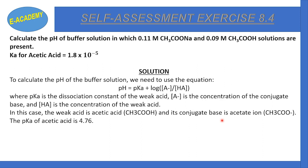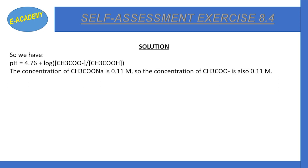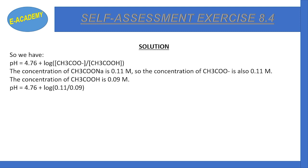The pKa of acetic acid is 4.76. Substituting into the equation: pH = 4.76 + log([CH₃COO⁻] / [CH₃COOH]). The concentration of CH₃COO⁻ is 0.11 molar and the concentration of CH₃COOH is 0.09 molar. So pH = 4.76 + log(0.11 / 0.09), which gives pH = 4.84.